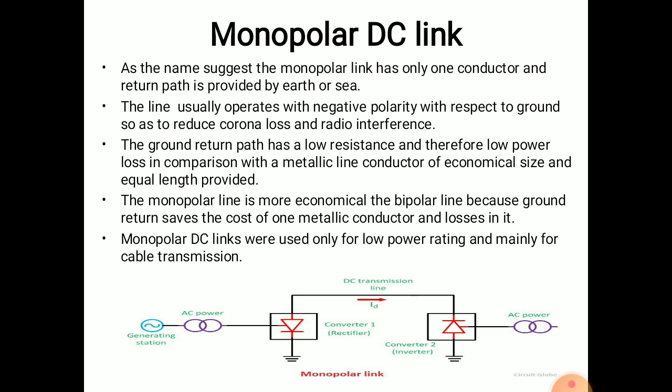The sea or ground return is permanent and of continuous rating. The ground return path has low resistance and therefore low power loss in comparison with a metallic line conductor of economical size and equal length. The monopolar line is more economical than the bipolar line because ground return saves the cost of one metallic conductor. Monopolar DC links were used for low power rating and mainly for cable transmission.